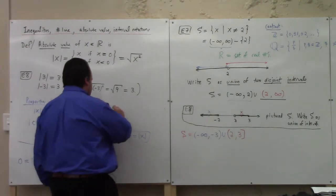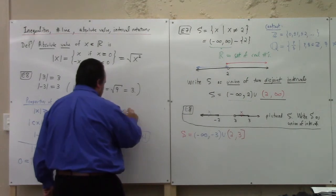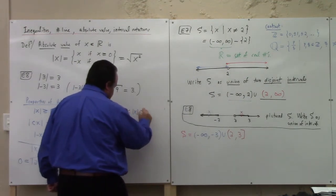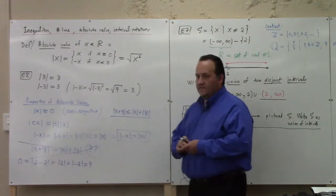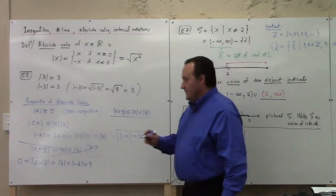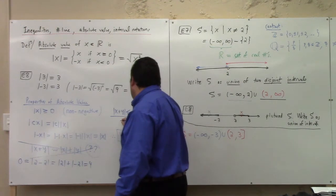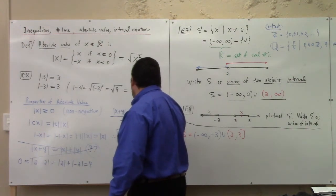You can say this much though. The absolute value of x plus y is less than or equal to the absolute value of x plus the absolute value of y. This is called the triangle inequality. And I don't think you'll even need it in here. I'm just mentioning it for your edification.